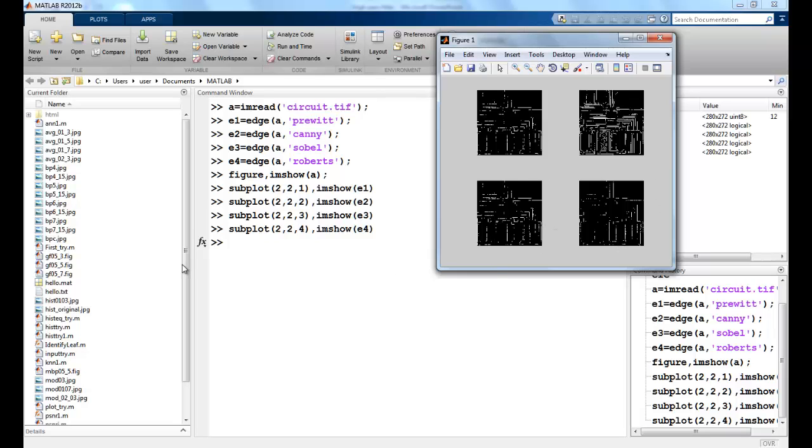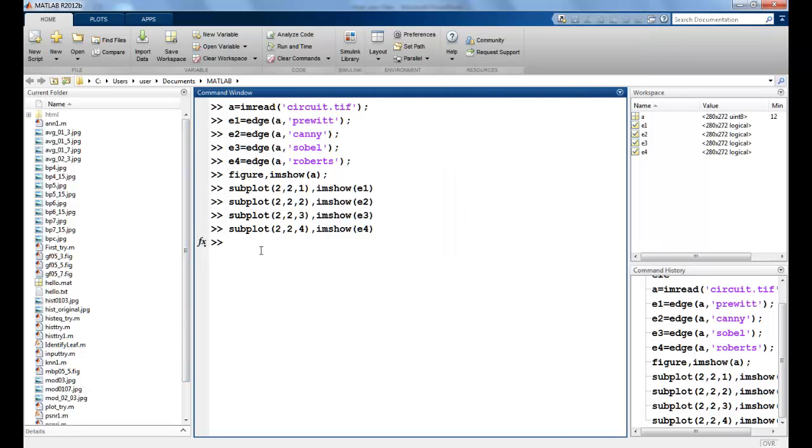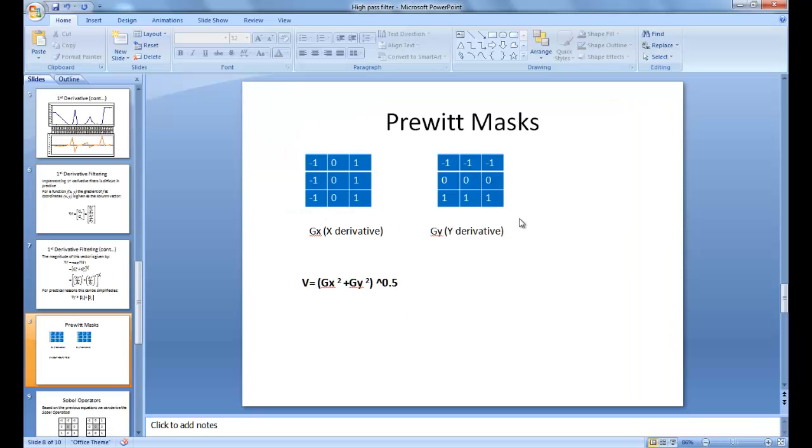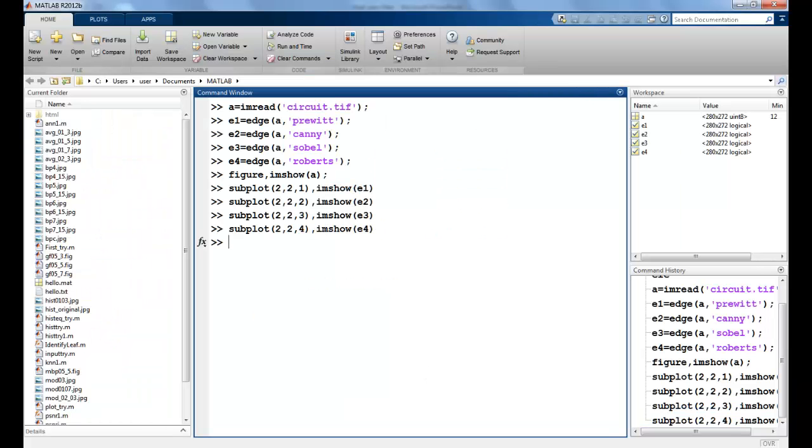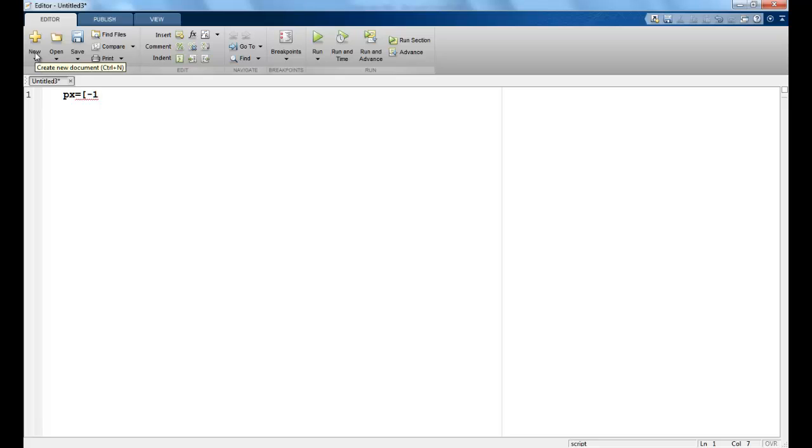So this is how we can find out the edges using the first order derivatives. If I want to implement the Prewitt without the inbuilt function then we knew that these were my kernels. So I will implement the Prewitt using these kernels. I will first create a matrix with the kernel values. I will first read the image. Now I apply the kernel to this particular image. I can see the intermediate values of the figures. Like before we will divide it by 255 to convert it into an unsigned integer.